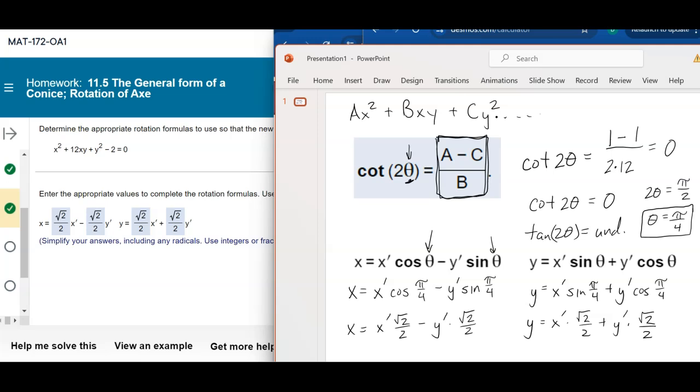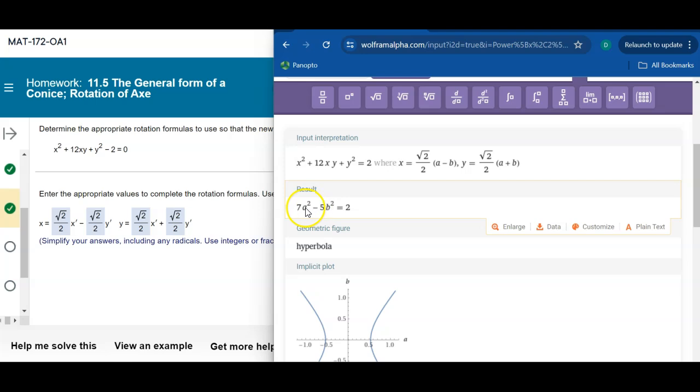Once we have that angle, we can plug it into this formula, do the math, like figure out what that cosine of that angle, sine of that angle are, plug it in everywhere. And then if I replace all of that in for the x's, and I replace all of this in for the y's, then I will create an equation that would get me back to that hyperbola in the standard form that we're used to.